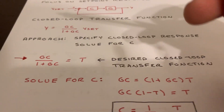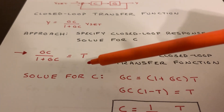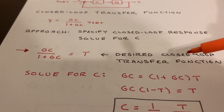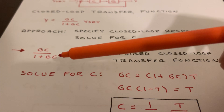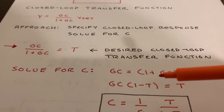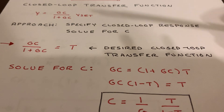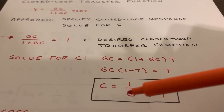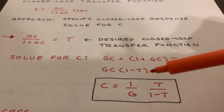We have our closed loop transfer function, GC over one plus GC, and we're going to set that equal to some arbitrary transfer function T. This is our desired closed loop transfer function. Given this T and knowing G, we can solve for C — one equation, one unknown. If we solve for C, we multiply through by T and collect terms: GC times one minus T equals T. Our final formula is that the controller C equals one over G times T divided by one minus T. This is the controller that will give us a closed loop response equal to T.